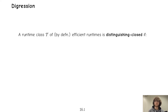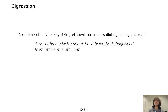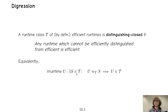In an abstract view, we can say that a runtime class — a set of runtimes defined to be efficient — is distinguishing-closed if any runtime which cannot be efficiently distinguished from efficient must also be efficient. In formula: for any runtime u, if there exists a runtime s in T such that u and s are T-time indistinguishable (no efficient algorithm can distinguish u and s), then u must also lie in T.